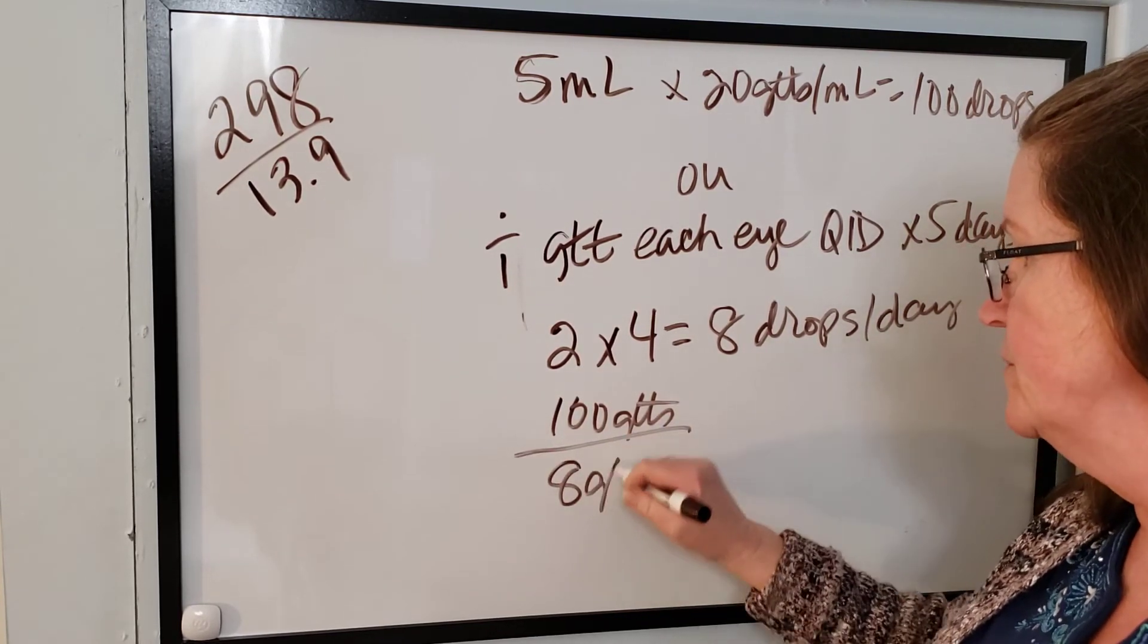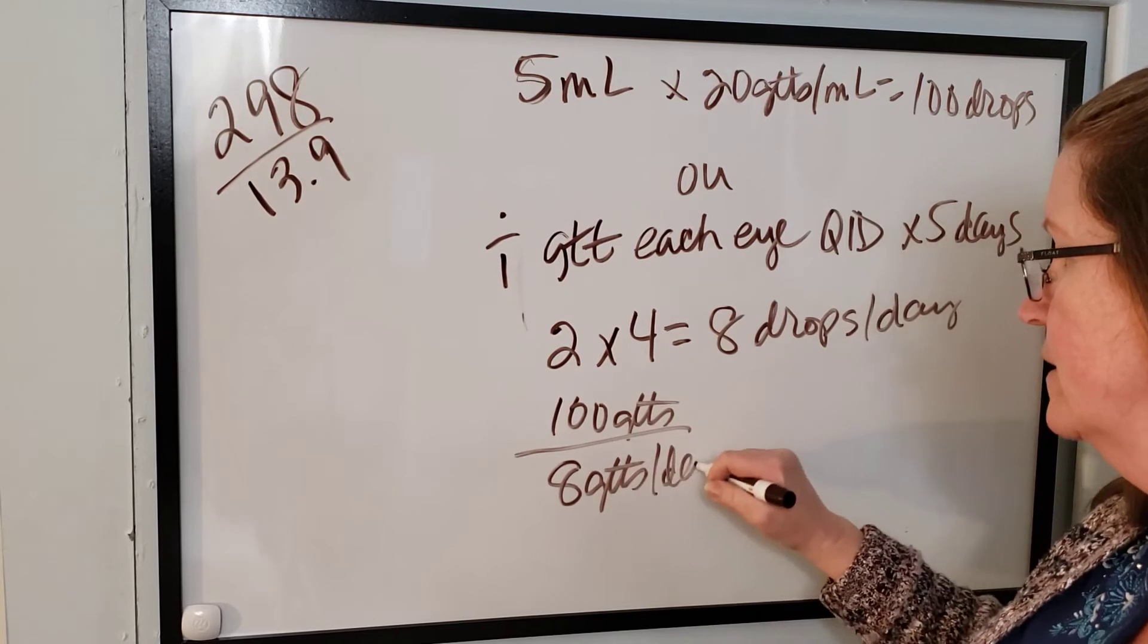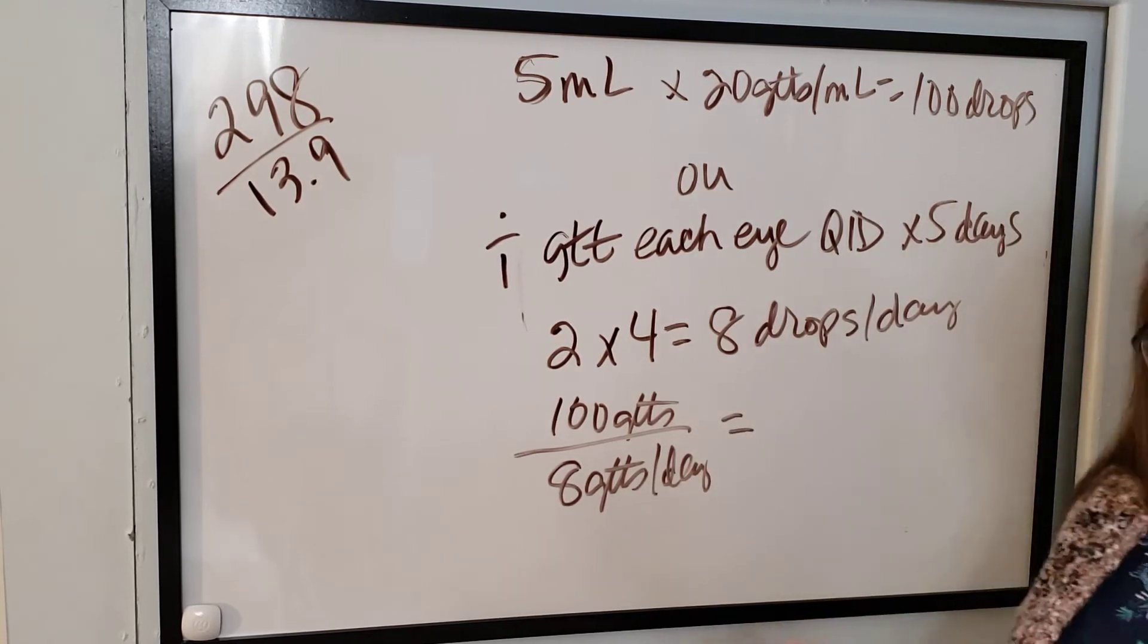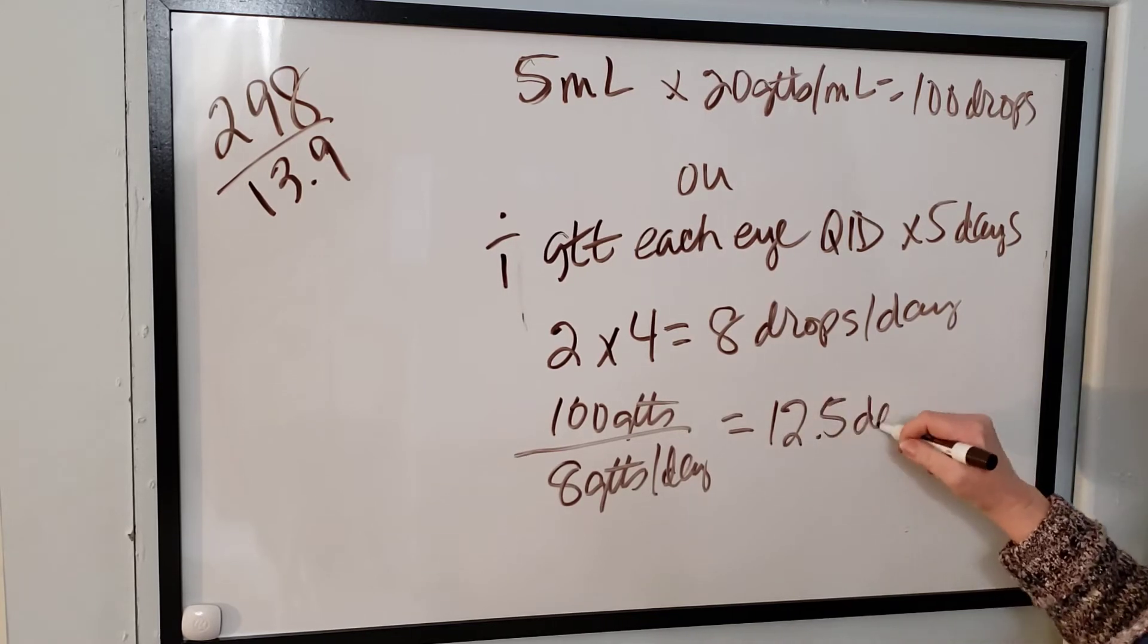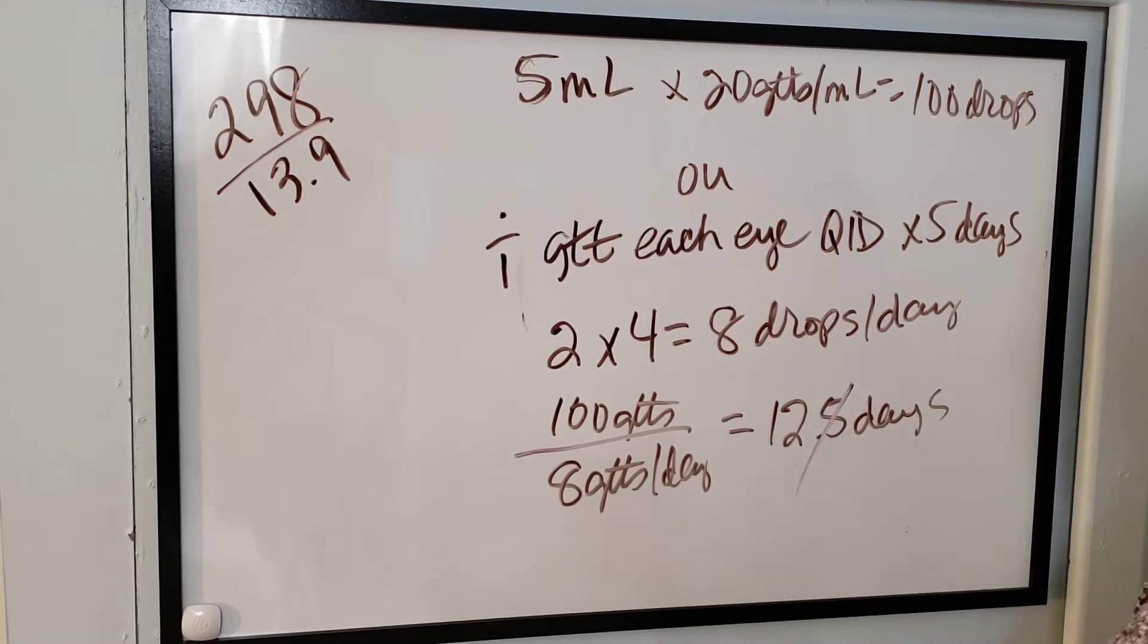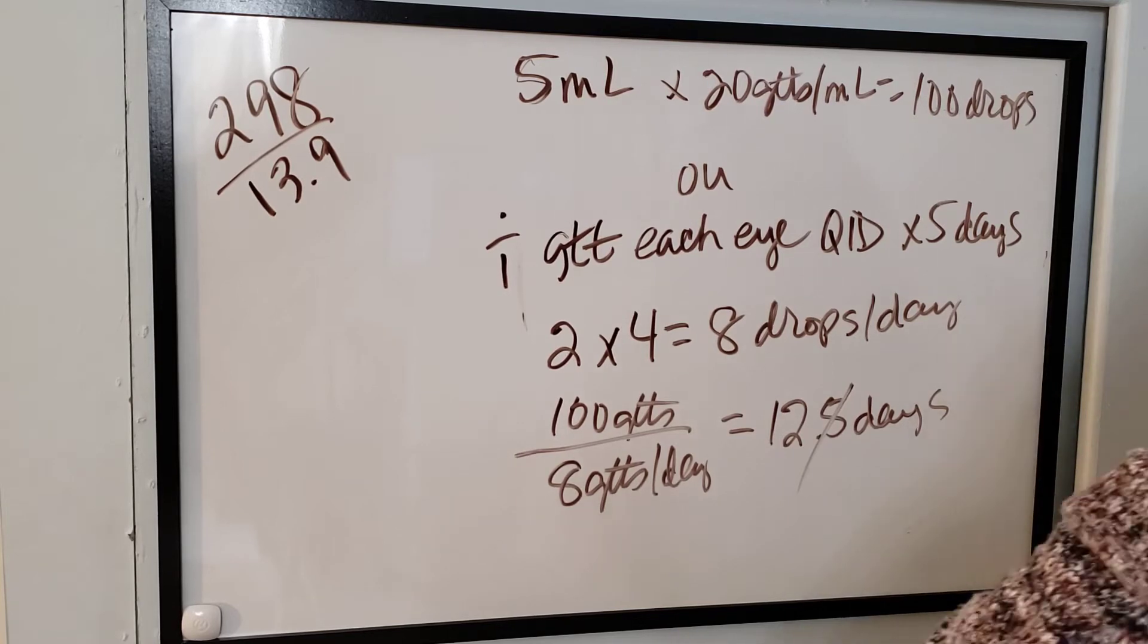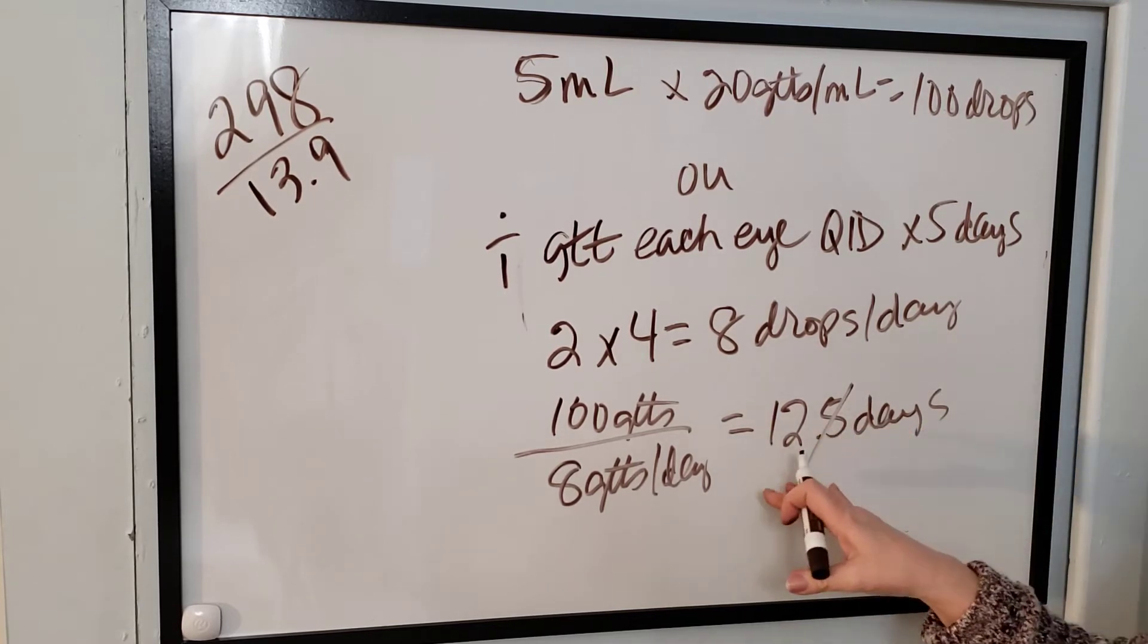100 drops divided by eight drops per day. And that's going to give me twelve point five days. And of course we're going to drop off the point five because we don't count any partial days. It will last twelve whole full days. Okay, if they weren't just taking it for five it would last twelve.